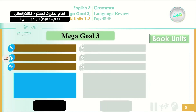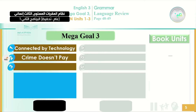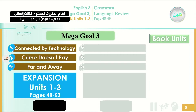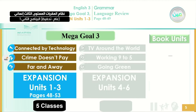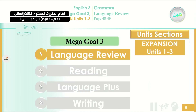Today our class is going to be on the expansion unit 1, 2, 3. This expansion reviews the most important things you studied in unit one — Connected by Technology; unit two — Crime Doesn't Pay; and unit three — Far and Away. You will find it on page 48 up to 53, and we're going to take five classes in this unit. The other five classes will be on expansion unit four to six.